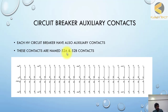We have already studied auxiliary contacts in part one. Each circuit breaker has its own auxiliary contacts; for the circuit breaker specifically we call them 52a and 52b — 52 is the code for a circuit breaker. 'a' and 'b' are two contacts: 'a' is the normally open contact and 'b' is the normally closed contact.